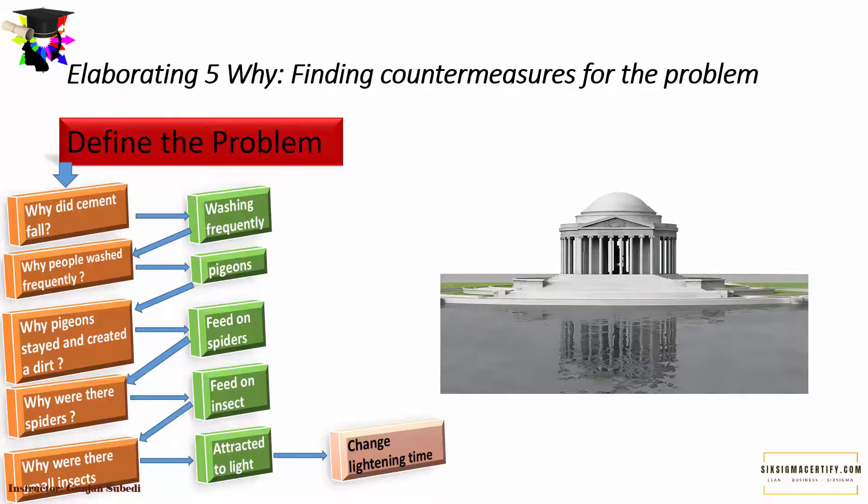So what they did was they changed the lighting time. As the insects with short life spans whose breeding time would be around the afternoon were not attracted inside the monument, just changing the lighting of the monument would take care of the falling of the cement. So the action required is changing the lighting schedule, one hour later in the afternoon. You can see here that even a small action such as changing the lighting schedule is affecting the falling of the cement.